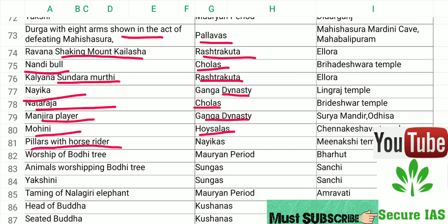Pillars with horse rider and Worship of Bodhi Tree are associated with the Maurya period. Animal Worshipping Bodhi Tree is from the Sunga period. Yakshini is from the Sunga period. Taming of Nalagiri Elephant is from the Maurya period. Head of Buddha and Seated Buddha are from the Kushana period.